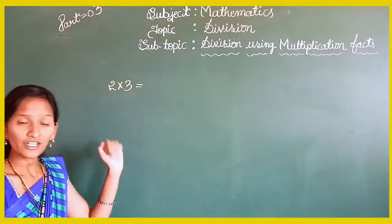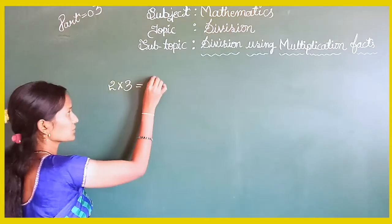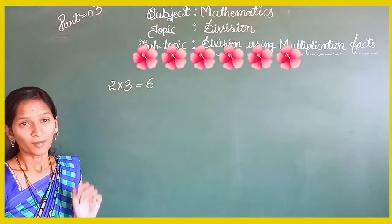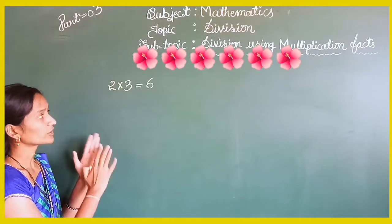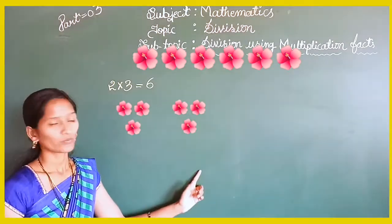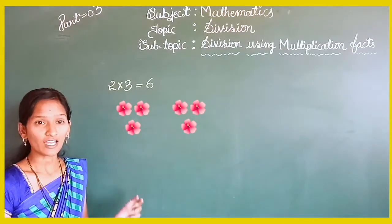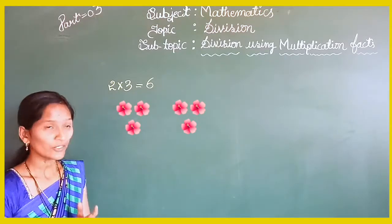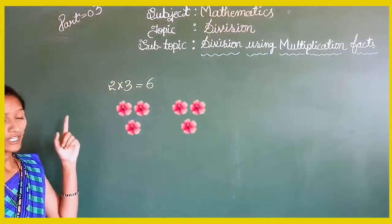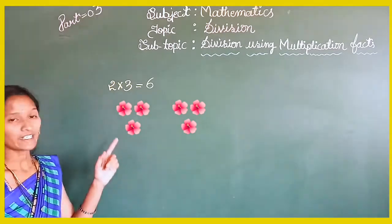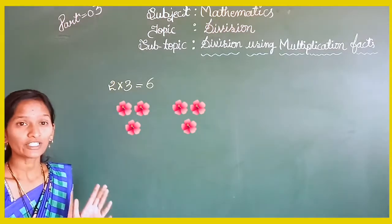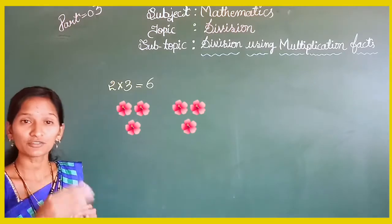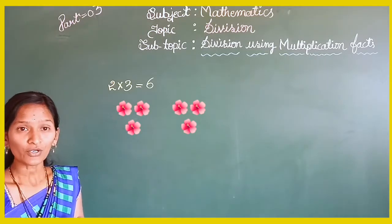In the table of 2, 2 threes are equals to 6. Now look at some flowers: the total number of flowers is 6, arranged in 2 groups, with 3 flowers in each group. So you can write this as the multiplication fact 2 into 3 equals 6 — where 2 is the number of groups, 3 is the number of flowers in each group, and 6 is the total number of flowers.